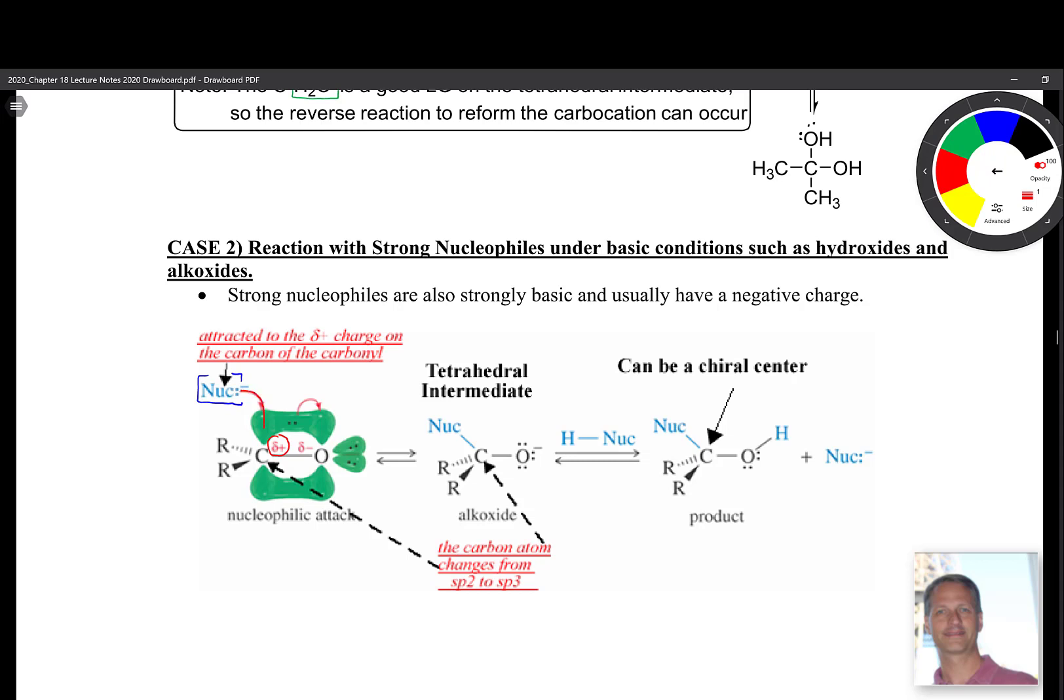So electron flow comes down here to that carbon. We're moving down this direction, and then that set of electrons comes over down here onto the oxygen atom there. What that gives us then is our nucleophile here attached to that carbon atom, and our oxygen with a minus charge here. One thing to point out is that we're changing our hybridization from sp2 to sp3. Whenever that happens, we have to make sure that we're being very careful and looking for potential new chiral centers that have been formed.